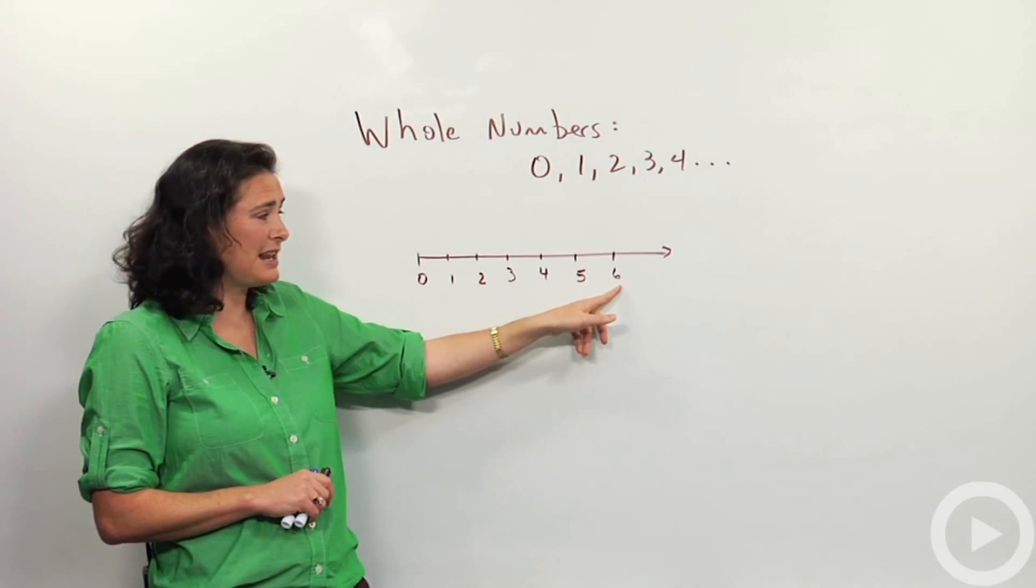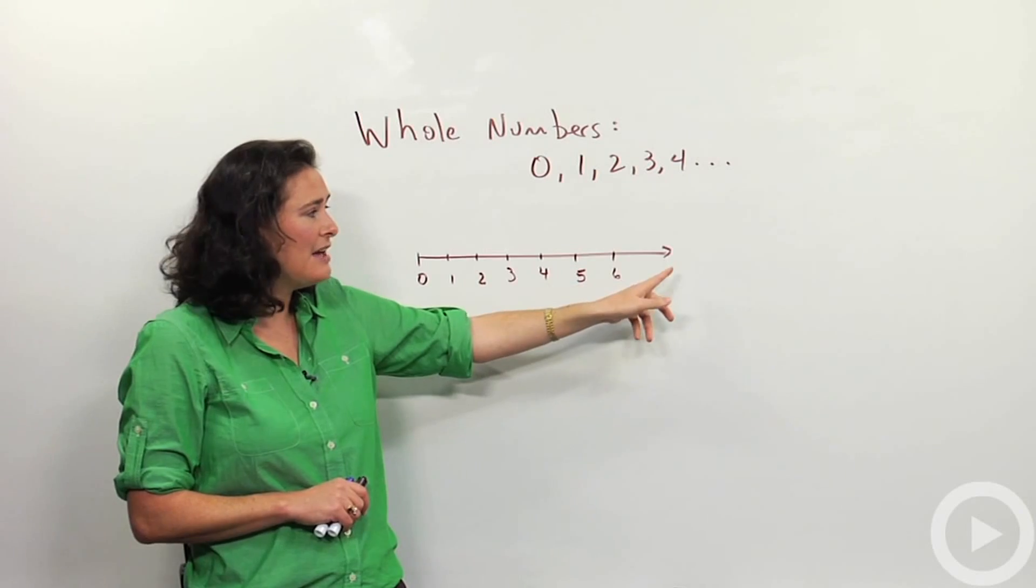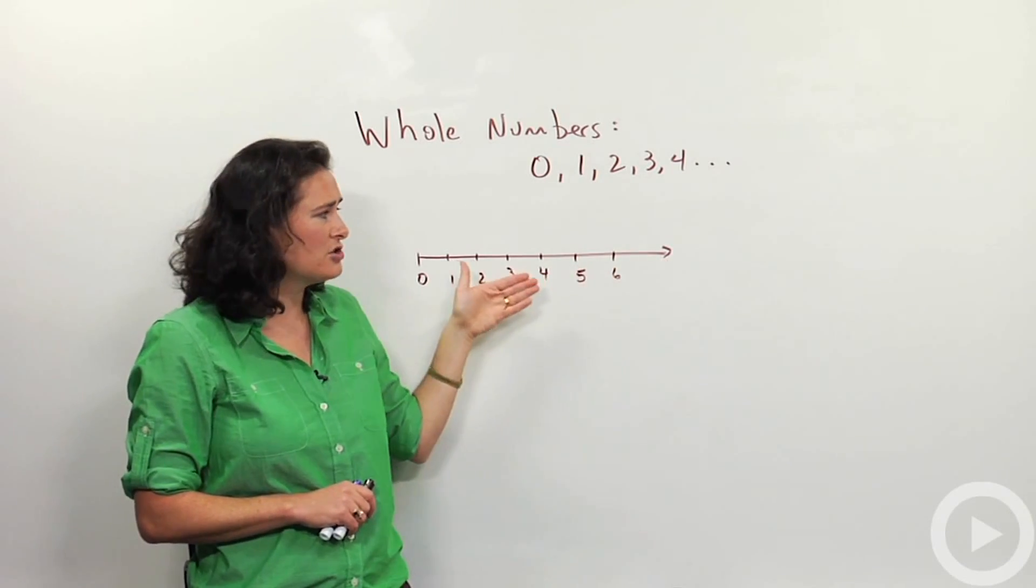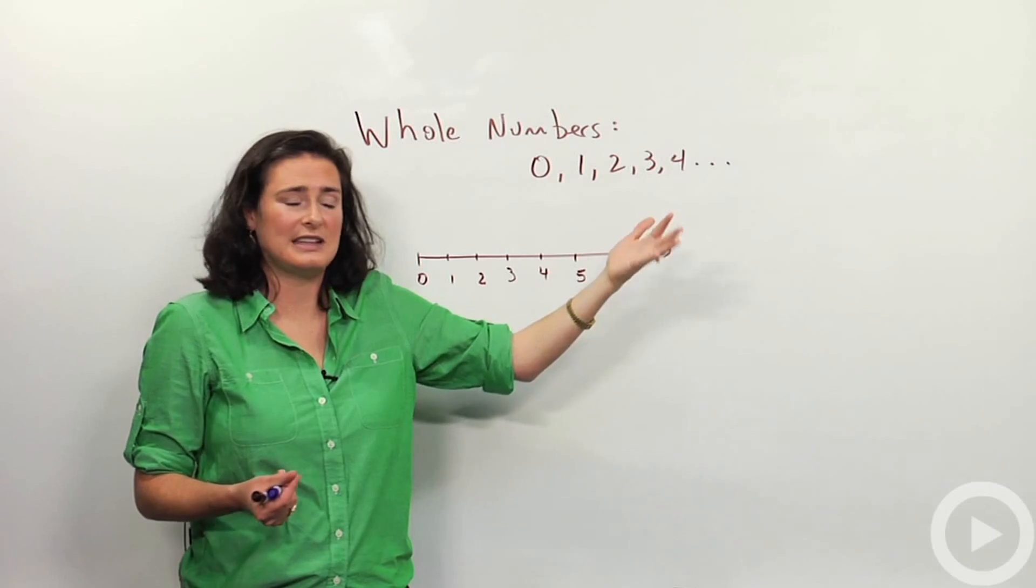And mine went up to 6, but it actually doesn't stop at 6 of course. I could keep counting 7, 8, 9, 10. That's what this arrow shows. This arrow shows that I could keep going in that direction on and on and on to as big of numbers as I could think of.